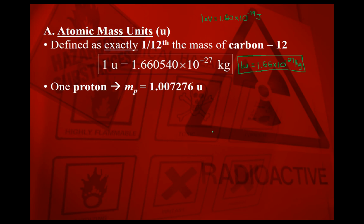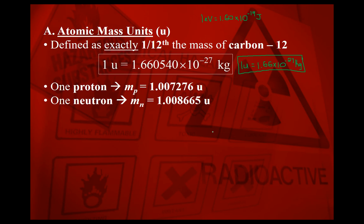One proton has a mass of 1.007276 atomic mass units. One neutron has a slightly larger mass of 1.008665 atomic mass units. While at three significant digits in kilograms both appear identical at 1.67 times 10 to the negative 27 kg, there is a small but real difference when expressed in atomic mass units.